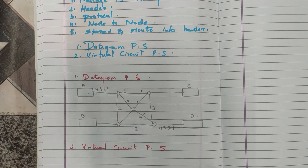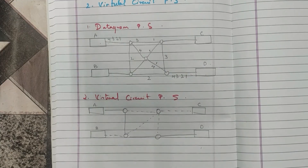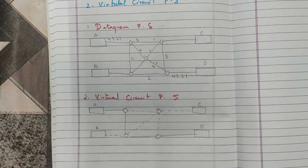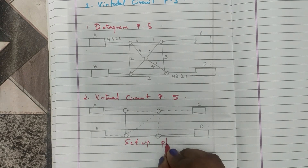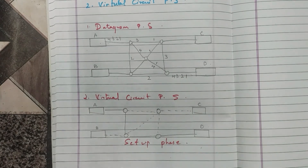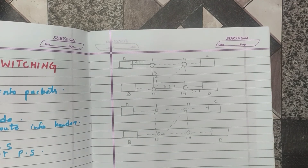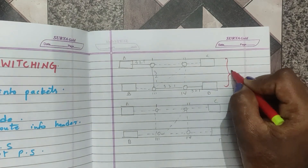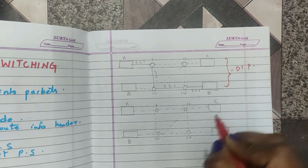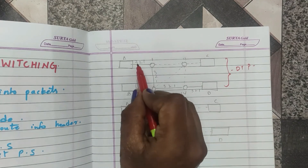Resources can be allocated during the setup phase, similar to circuit-switched networks. Here is the diagram for the setup phase, showing how the setup phase works in virtual circuit packet switching.